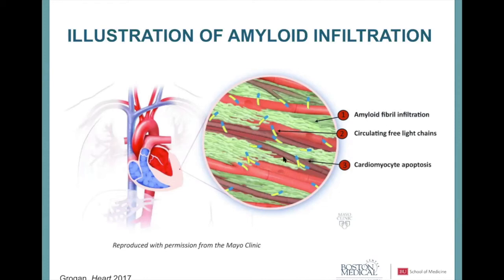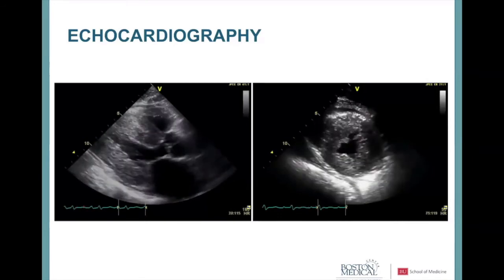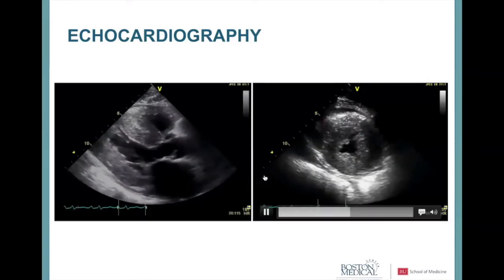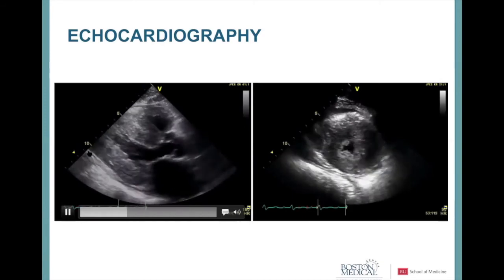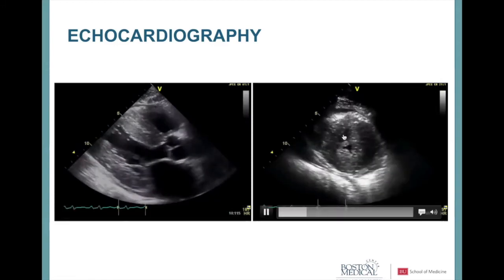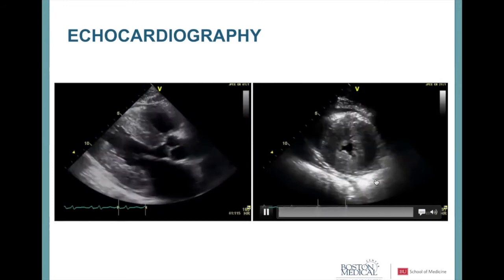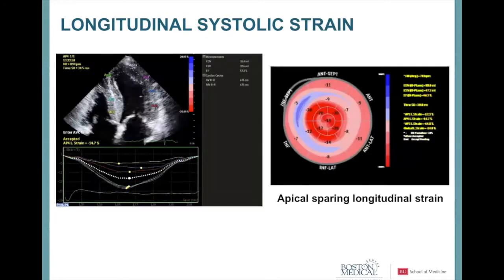This echocardiogram example shows a patient with amyloidosis with very marked thickening of the heart muscle — almost twice as thick as normal — though the squeezing function and LVEF remain quite normal. LVEF reduction is a later-stage manifestation of AL amyloidosis. Longitudinal strain shows a characteristic pattern in amyloidosis: a difference in strain between the apex and the base of the heart, which should prompt doctors to suspect amyloidosis.